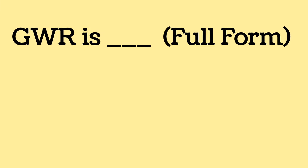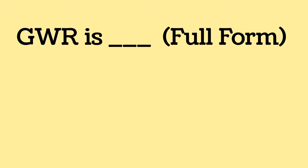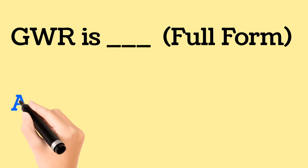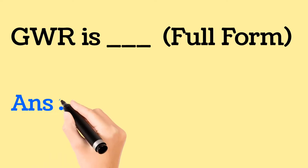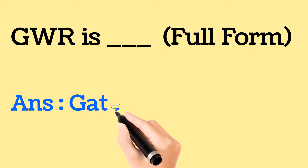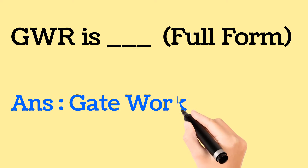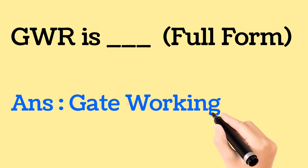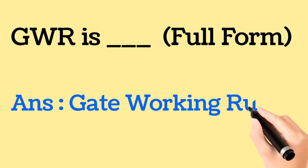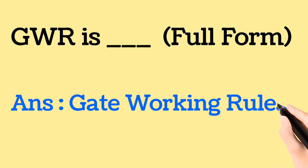Next question: What is GWR? What is the full form of GWR? We frequently hear the word SWR. SWR stands for Station Working Rules. GWR stands for Gate Working Rules — rules pertaining to the working of a gate. So GWR means Gate Working Rules.